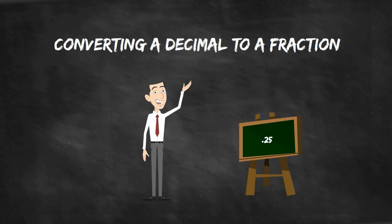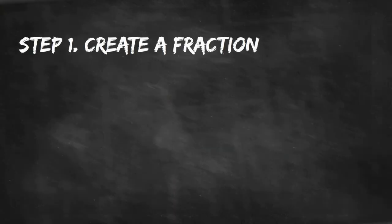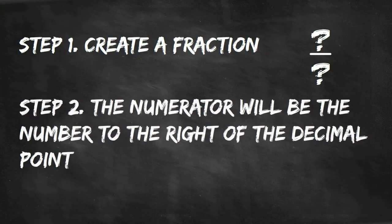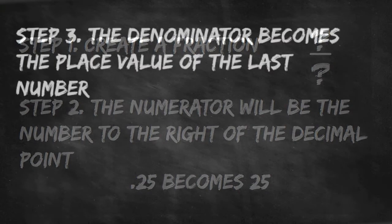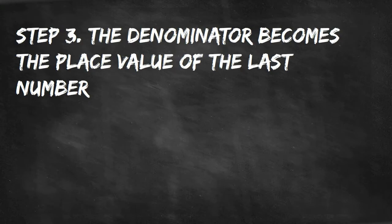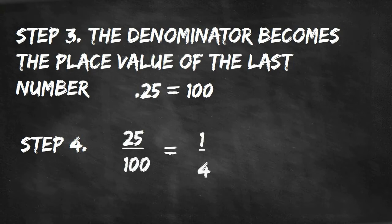We will follow three steps. Step 1: We need to create a fraction but what will the top and bottom numbers be? Step 2: The numerator will be the number to the right of the decimal point. Step 3: The denominator will be the last place of value after the decimal. Step 4: We will simplify the fraction.